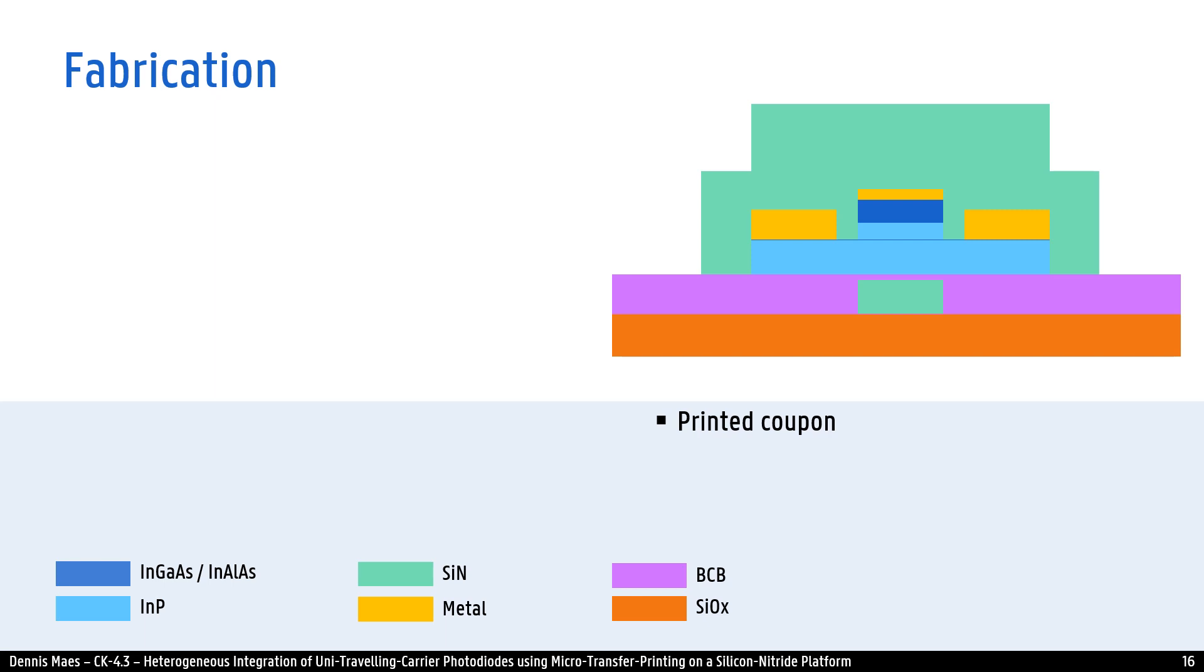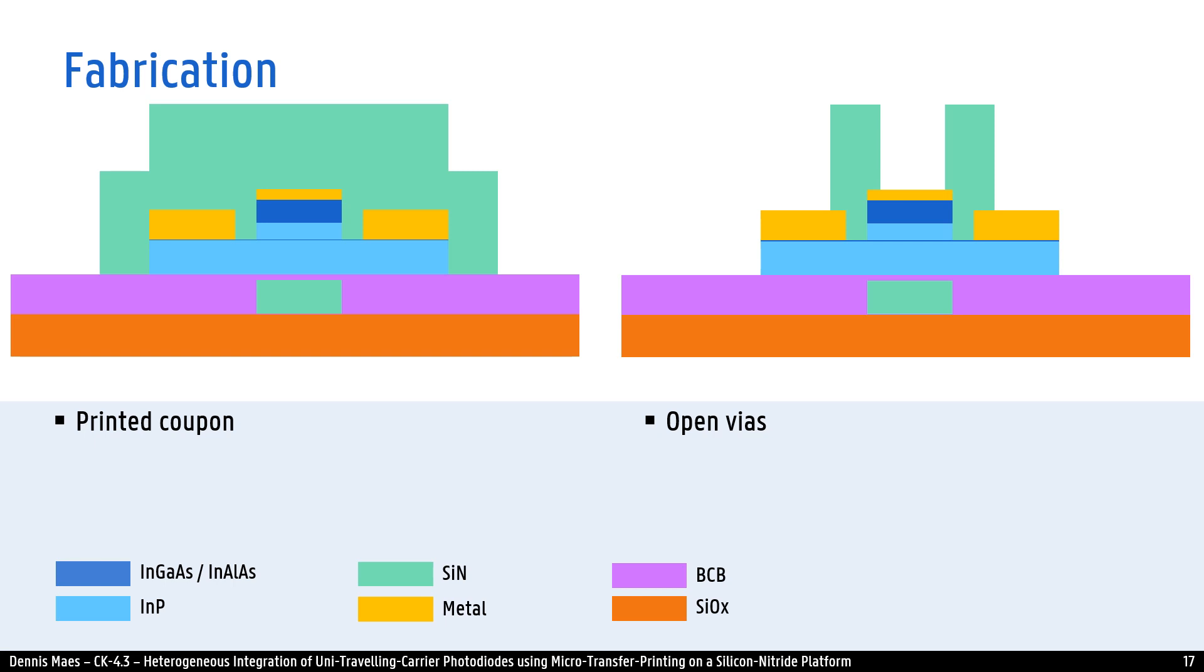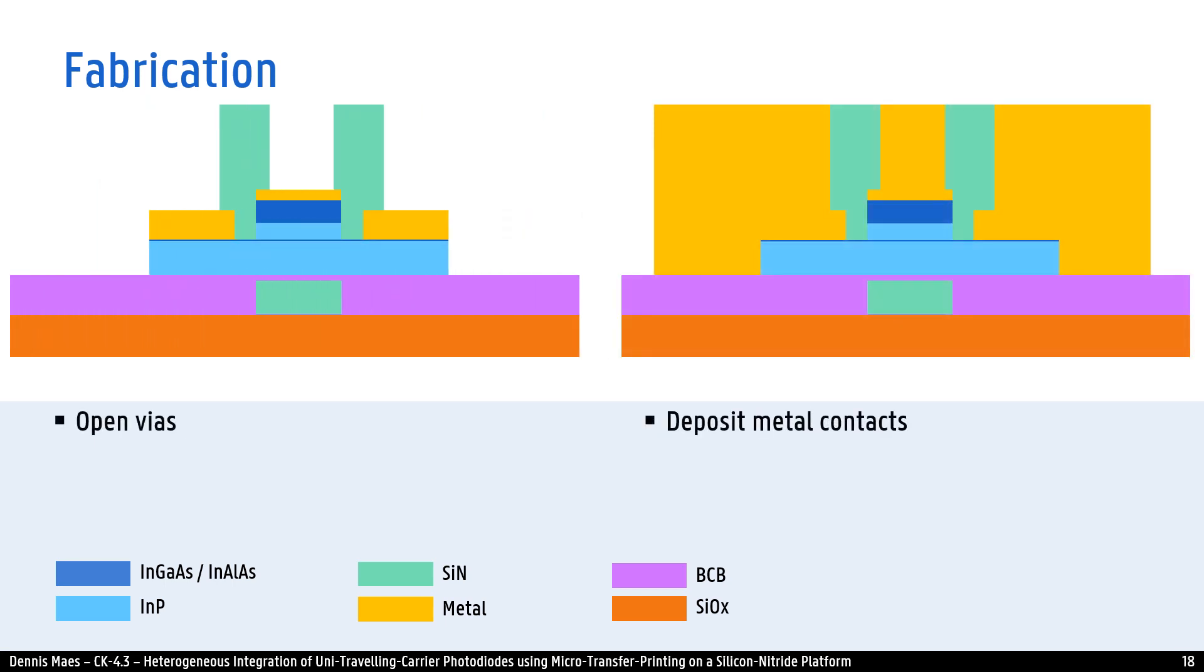After printing the device is fixed by curing the BCB and little post processing remains. Vias are made to access the contacts and metal pads are deposited.